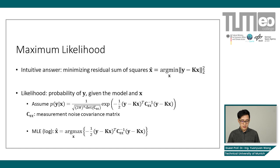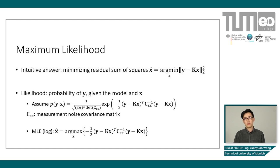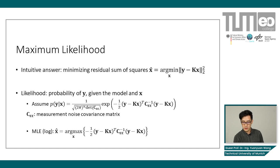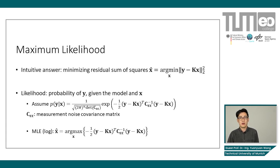An intuitive answer is that I want to find x that minimizes the difference between my observation y and the modeled observation, which is K multiplied by x. The upper 2 means a square and the lower 2 is the L2 norm of this vector. Some of you may already say this is nothing else but the least squares — and you're absolutely right. But my question is: why is least squares the optimal estimator in this case?